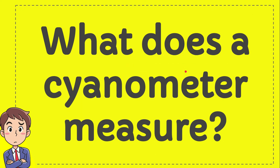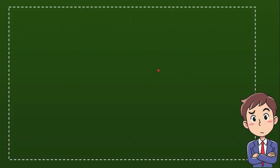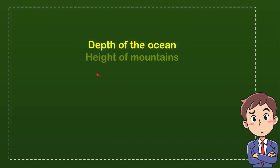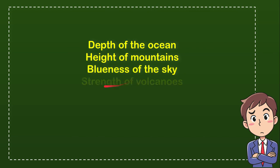What does a cyanometer measure? I'll give you four options — try to guess which one is correct. The first option is depth of the ocean, the second is height of mountains, the third is blueness of the sky, and the last option is strength of volcanoes. From these four options, which one do you think is the correct answer?